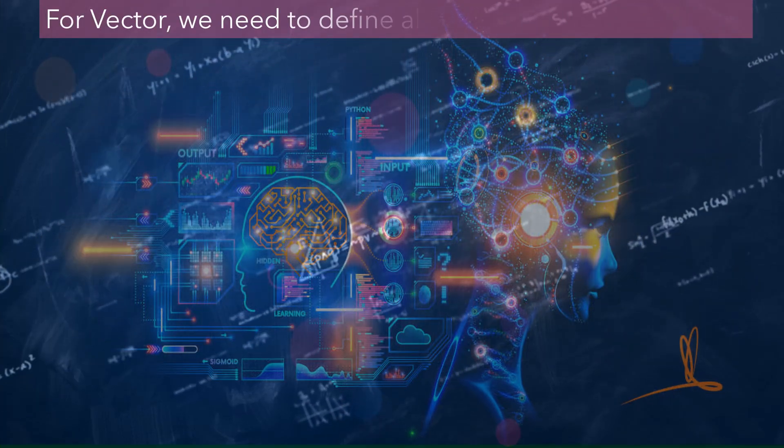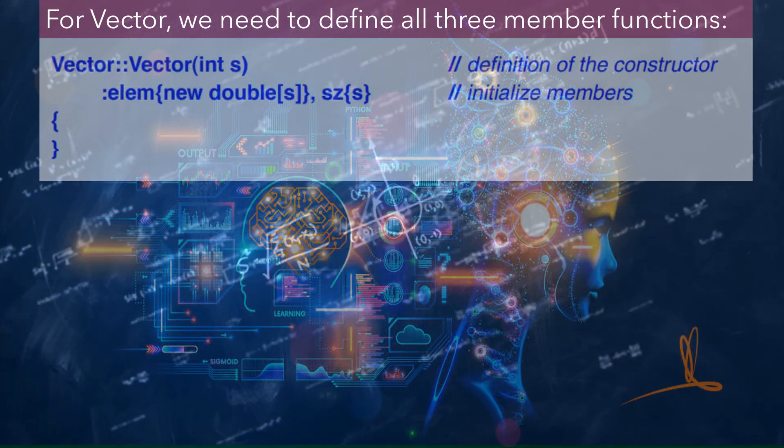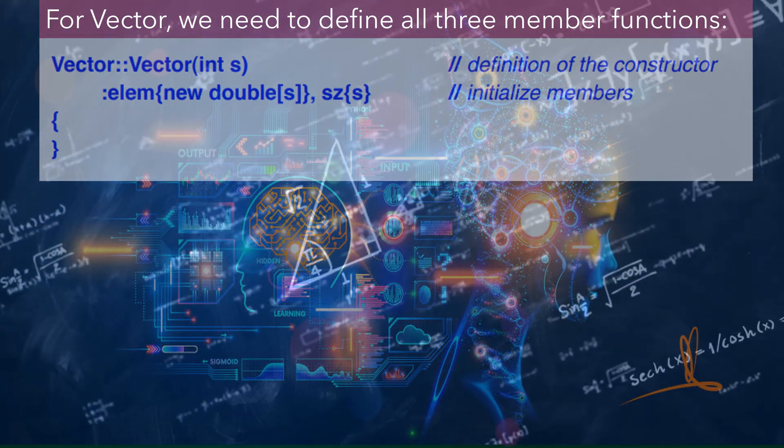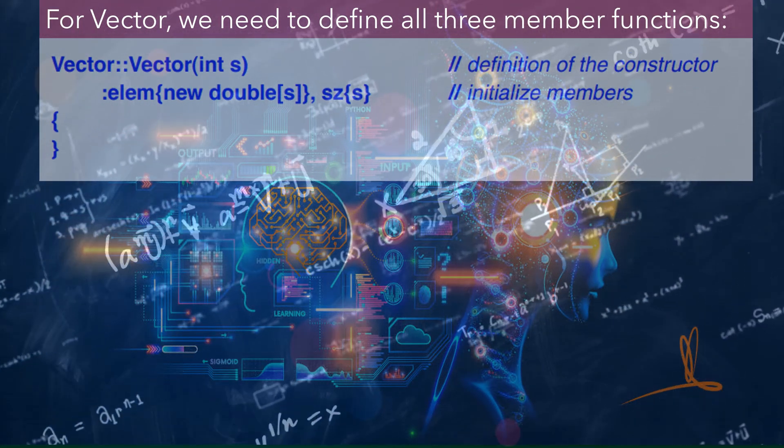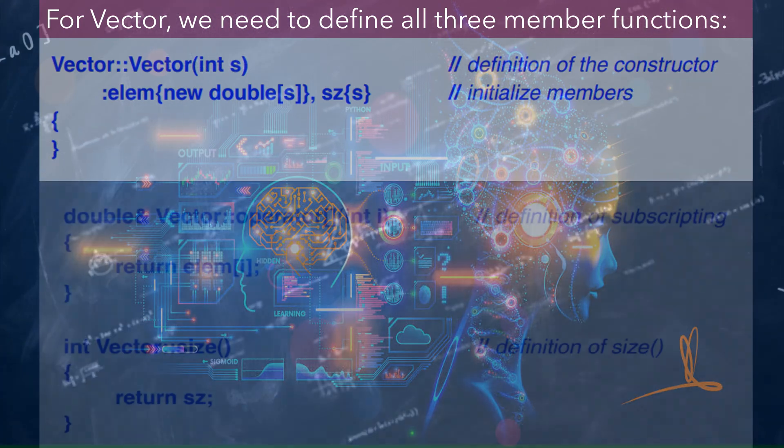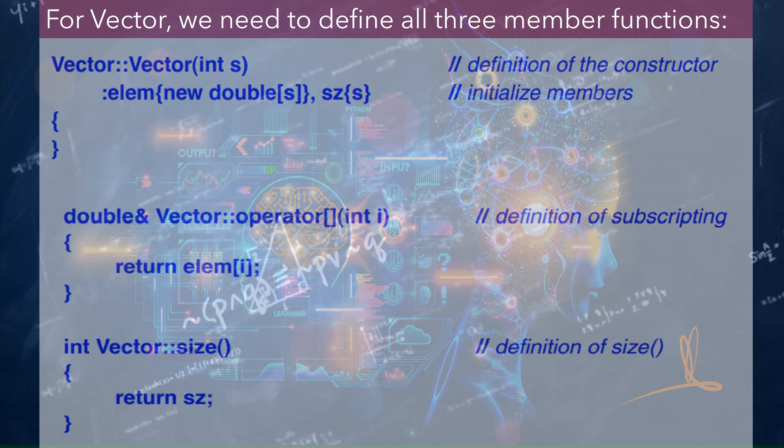For Vector, we need to define all three member functions. Vector::Vector(int s): elem{new double[s]}, sz{s} { // initialize members }